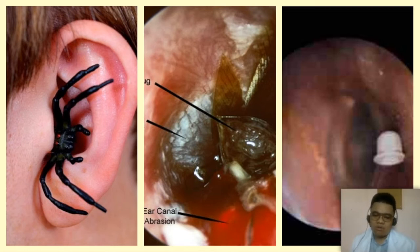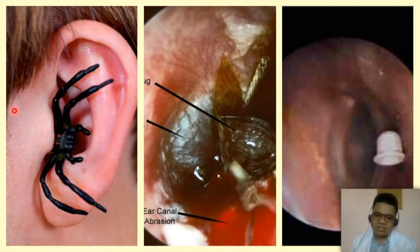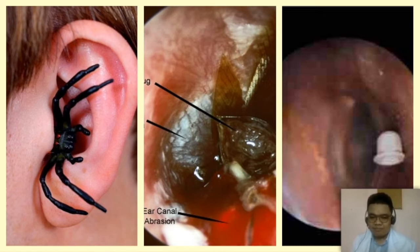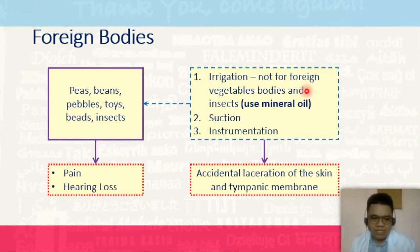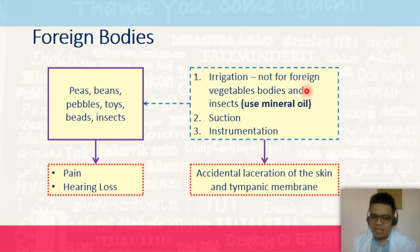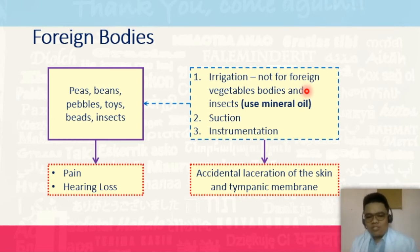Now let's go to foreign body obstruction — the presence of a foreign body inside your ear. This could be part of a toy, a bug, or even a spider. Foreign bodies could include a pea, a bean, pebbles, toys, beads, or insects. The common candidates for these are children, who love to put anything inside. This results in pain, which is why they tend to become irritable. If your baby has no other reason to cry, try to consider the presence of a foreign substance in the ear, which also results in hearing loss.